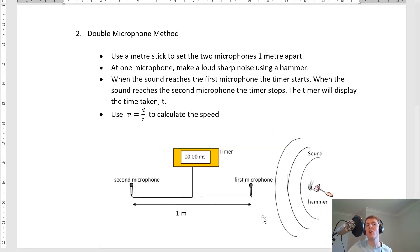The second method is called the double microphone method, and this again just kind of does what it says, so there's going to be a double microphone involved. You use a metre stick first of all to set the two microphones one metre apart. That's shown in this picture down here. So you've got one microphone over here, and one microphone over here set one metre apart. At the first microphone you would make a loud sharp noise. Now you could use a hammer or some other metal object, or you could use a knife or a fork or some kind of cutlery.